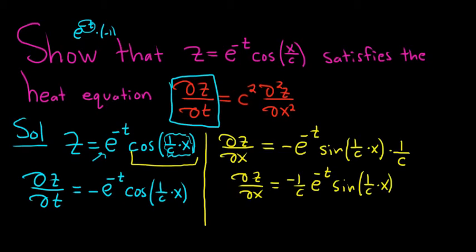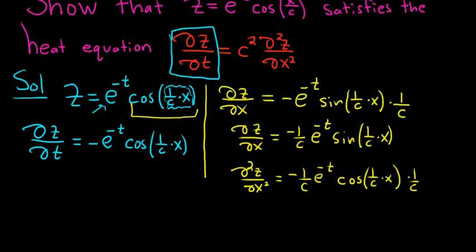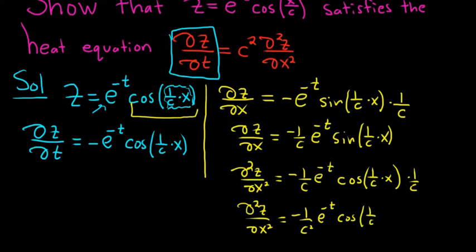Now we do it again — the second derivative of z with respect to x. All of the t's are constants, so everything hangs out. The derivative of sine is cosine this time, so we get negative 1 over c times e to the negative t cosine of 1 over c times x, times the derivative of the inside, which is 1 over c. We can combine the c's, so the second derivative with respect to x equals negative 1 over c squared times e to the negative t cosine of 1 over c times x.